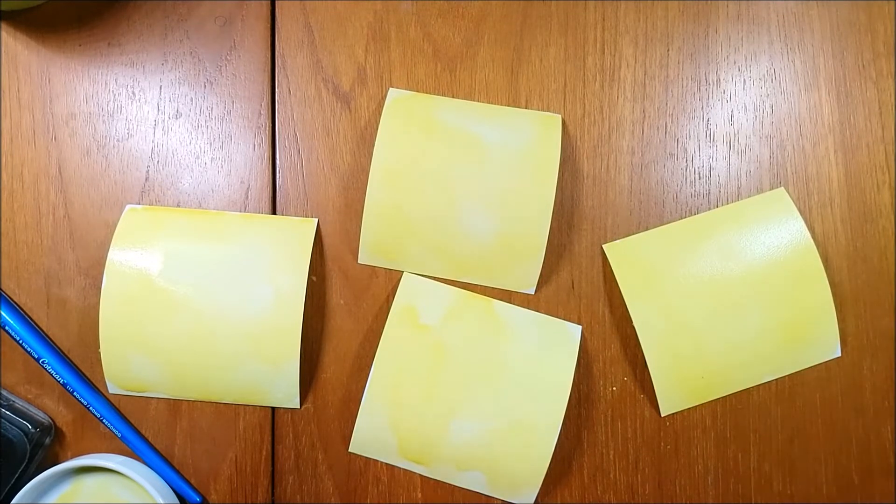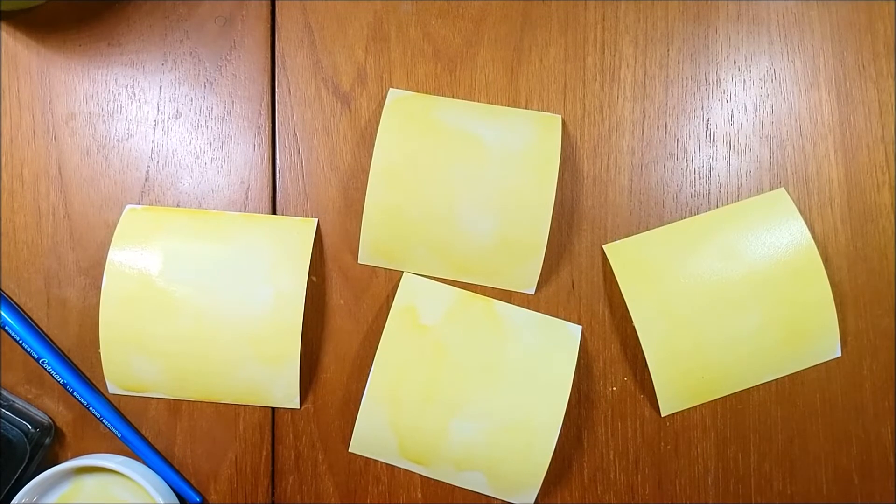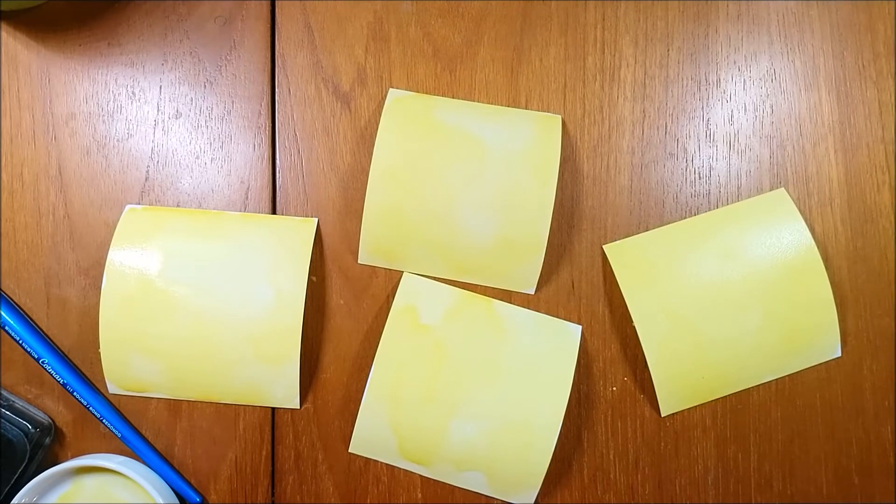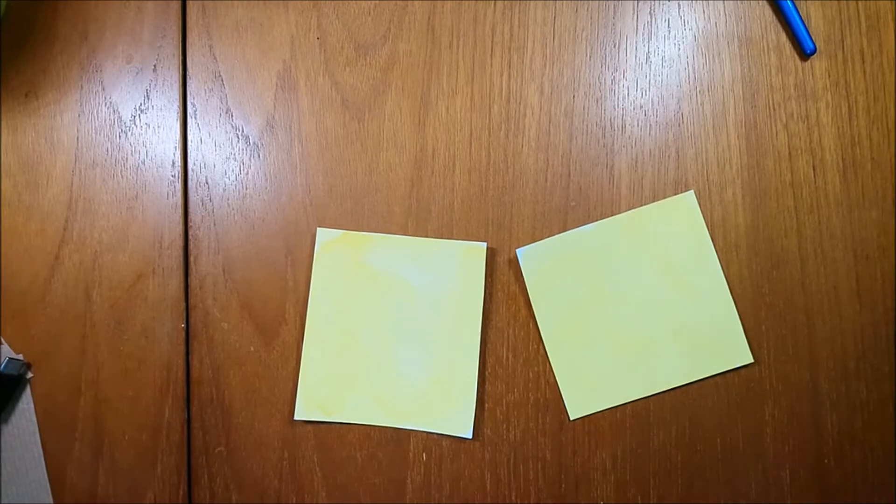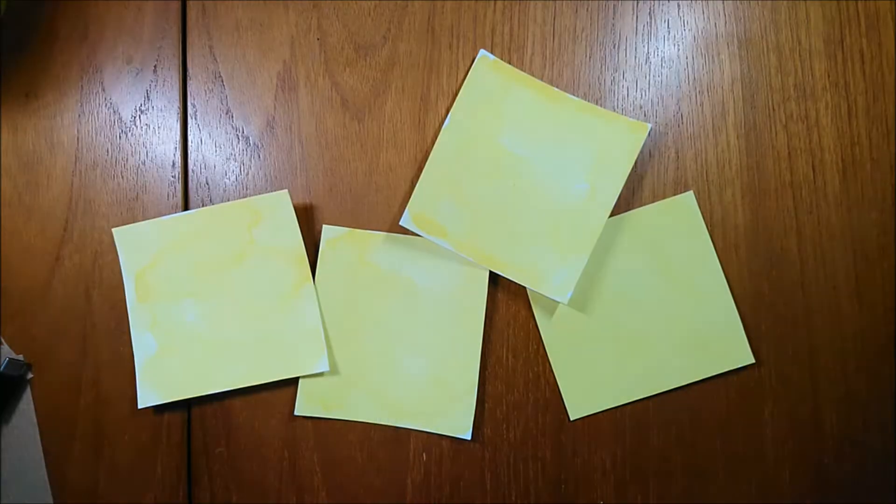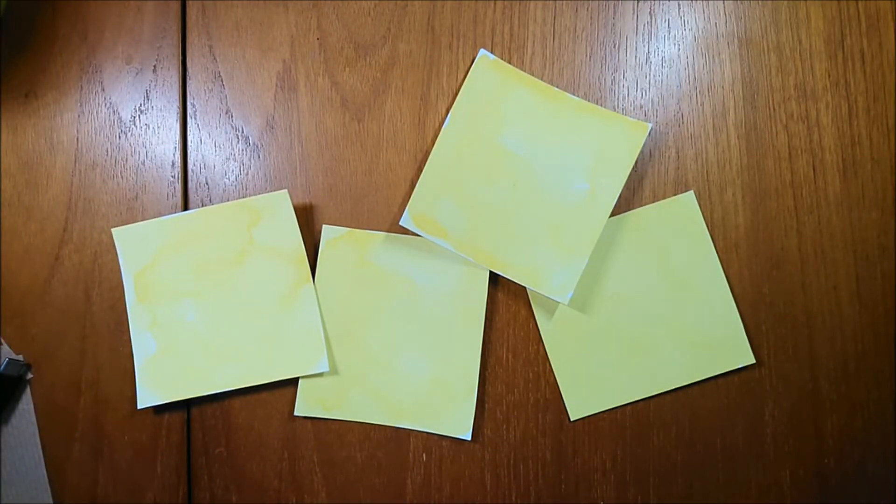You can find all these papers and more down in the description bar below. So I'm going to look at now how much the papers warped, and as you can see, the Daler-Rowney has warped the most while the Saunders has warped the least.